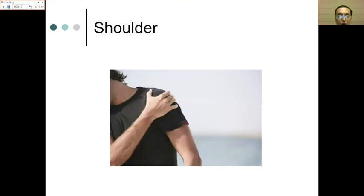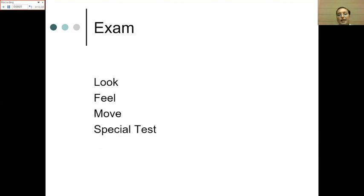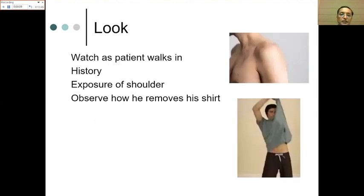Examination of the shoulder, just like any other part, follows the sequence of look, feel, move, and special tests. We start with inspection — look — which begins as soon as the patient walks into the clinic. Observe how they are holding their upper limb and body. Good history followed by proper exposure is required for shoulder examination.